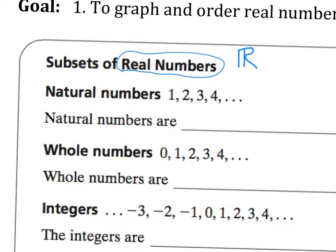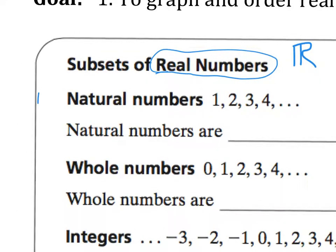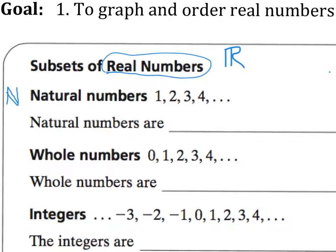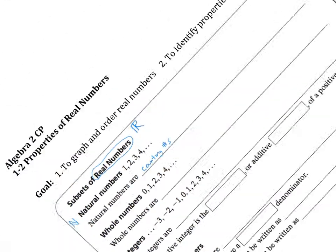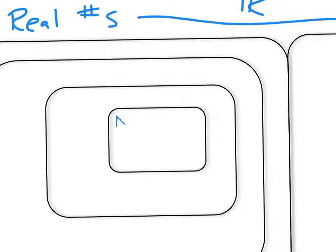Natural numbers. The first one is called natural numbers. And natural numbers uses the symbol N with an extra little piece of the body there. Natural numbers refer to the counting numbers. One, two, three, four, etc., all the way to infinity. So where do those fit? Well, over here, they are the smallest subset here. Natural numbers: one, two, three, four, etc.